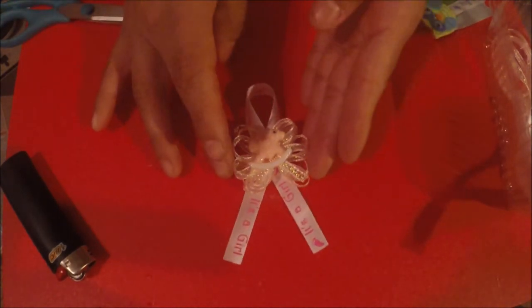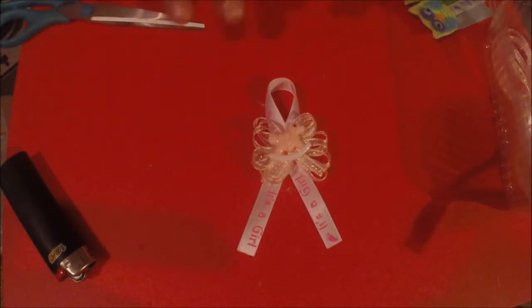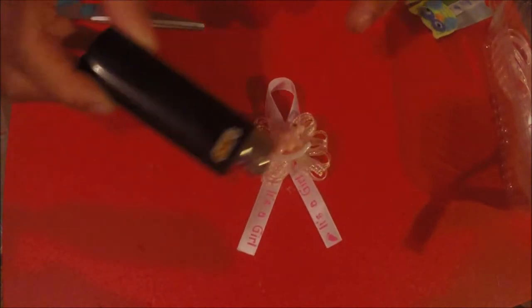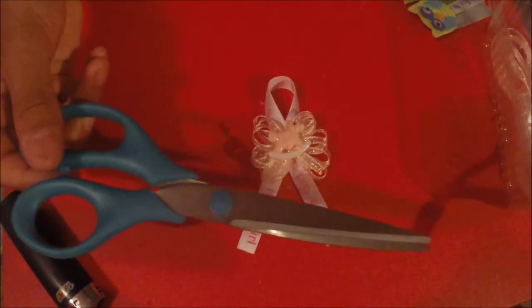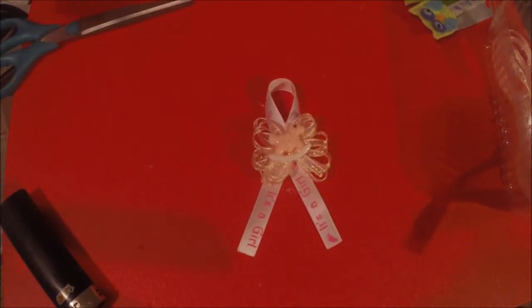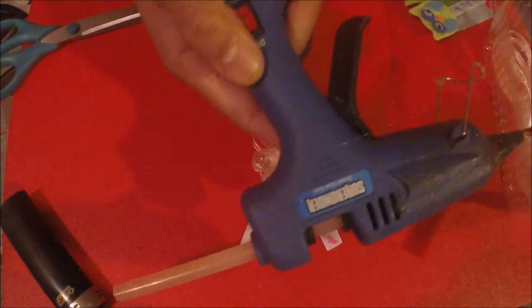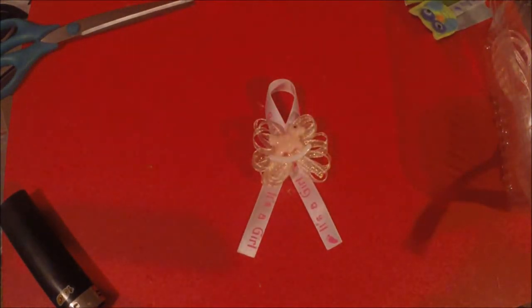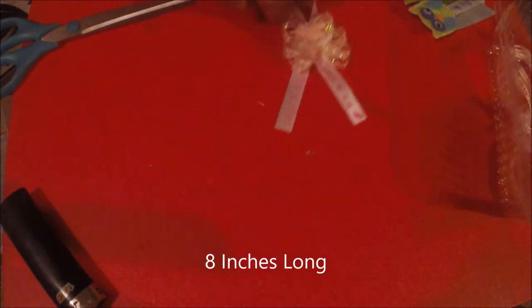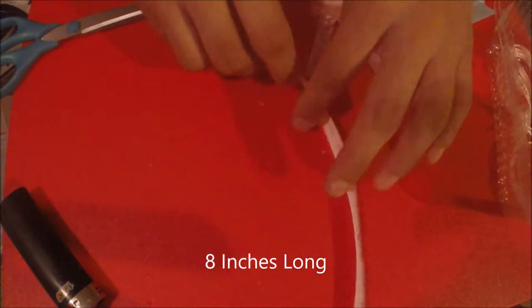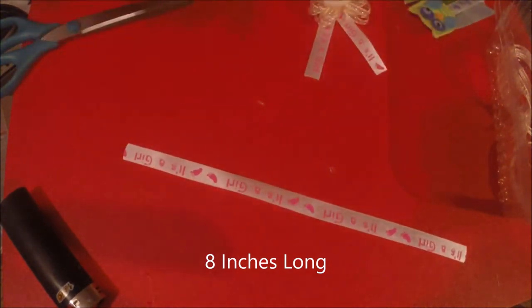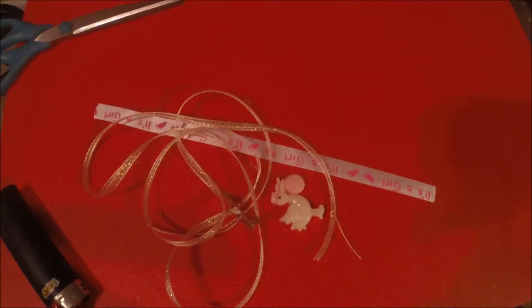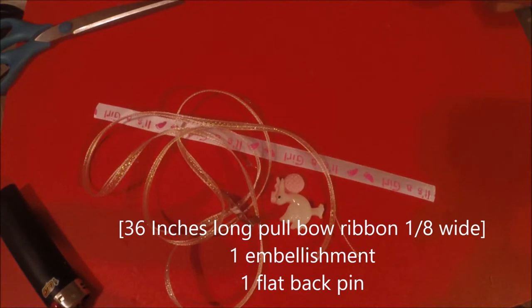Our next one is this one. For the materials that we're going to use for this one, it's a lighter, scissors, hot glue gun, ribbon. And then it says it's a girl. It can also say it's a bow, baby girl, baby boy.